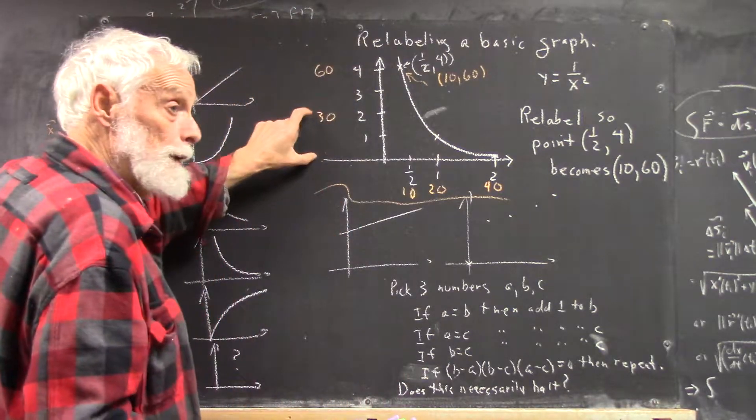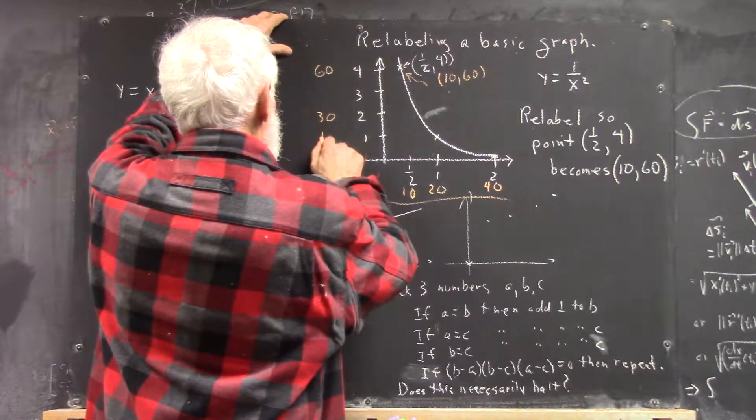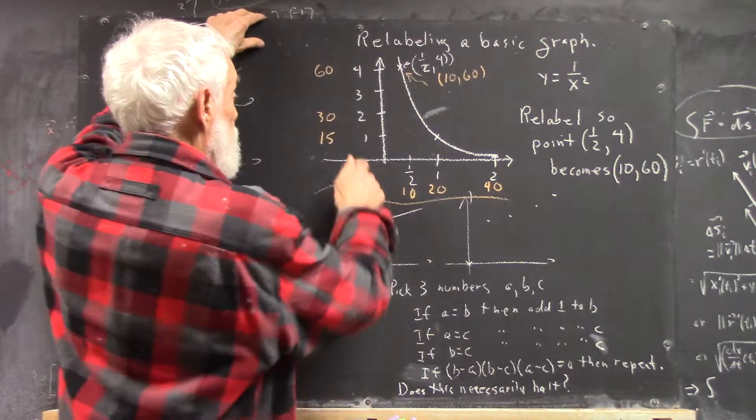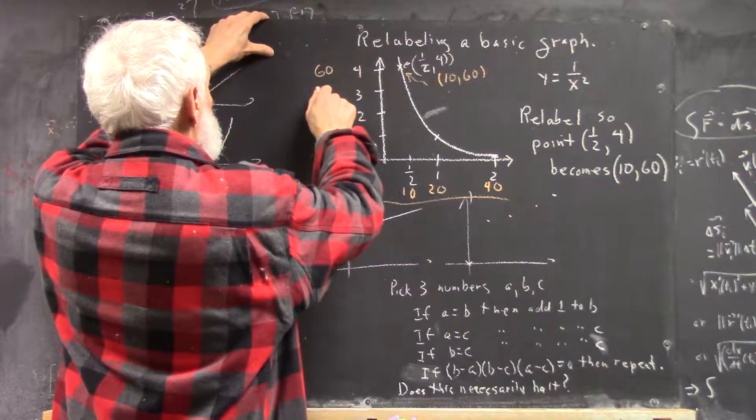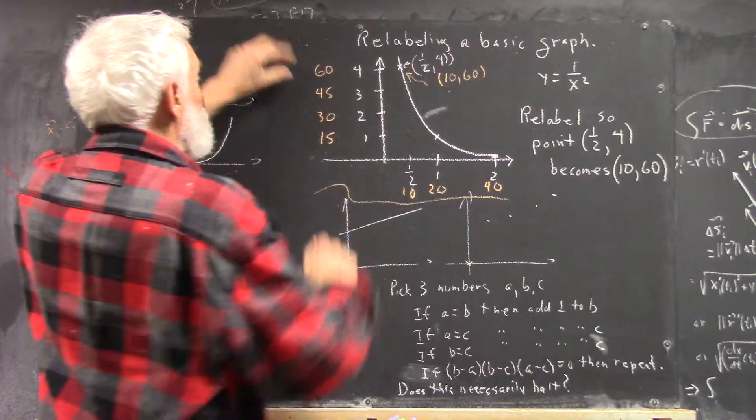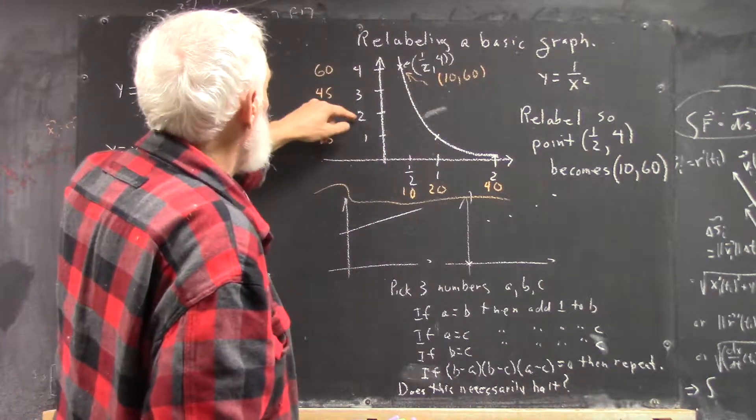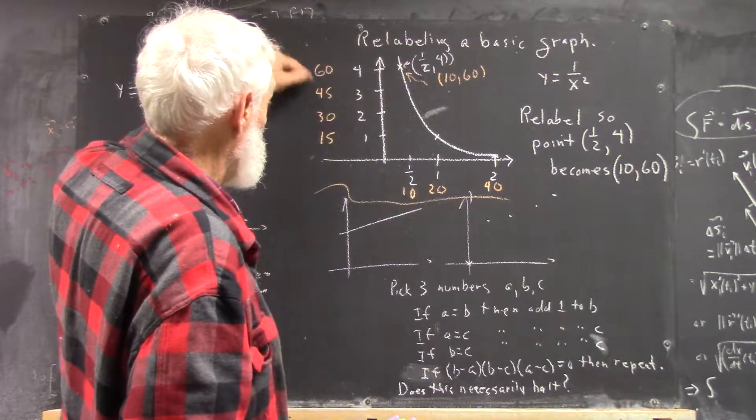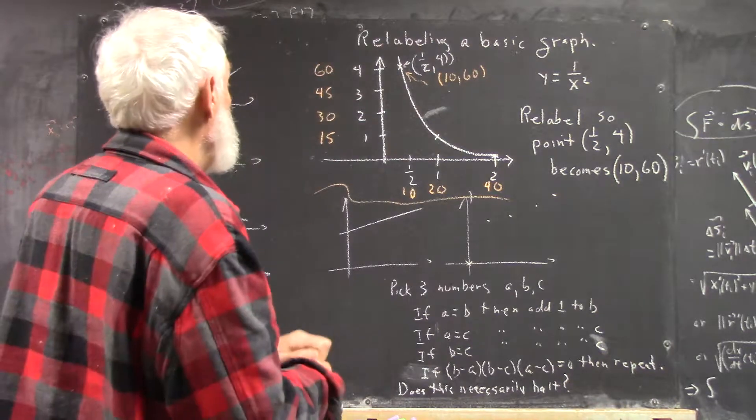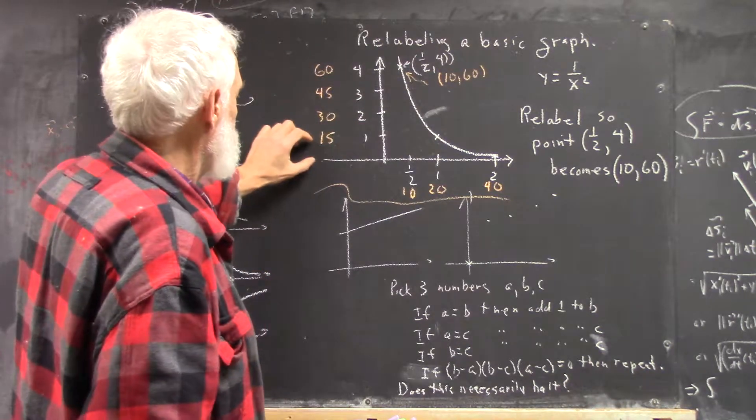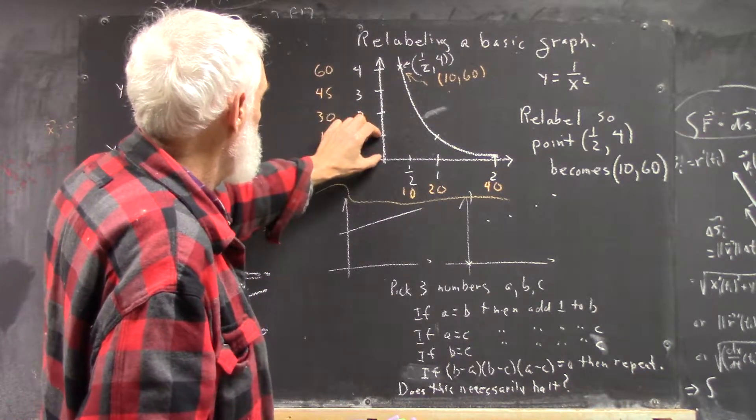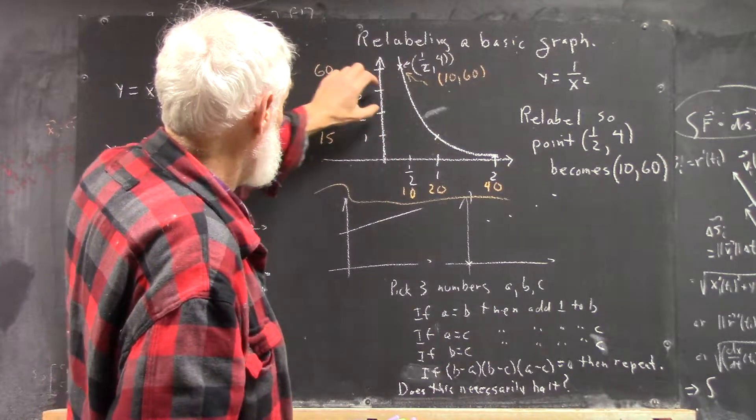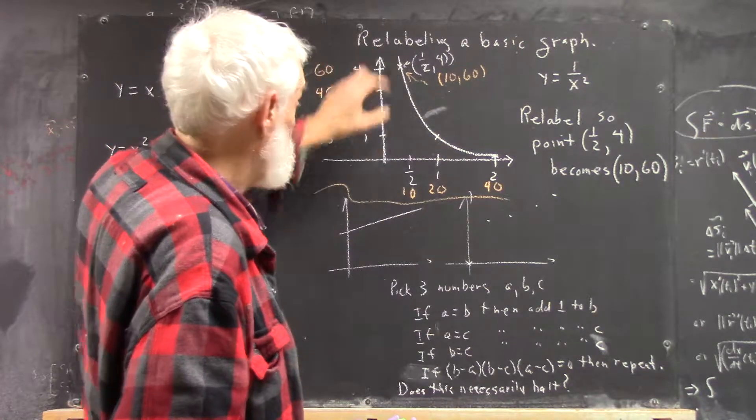And half of 30 is 15, and this point is twice as close to 0 as this one, so this point has to be 15. And then we can easily figure out that this point is halfway between this one and this one. Halfway between 30 and 60 is easily calculated. That's 45. And now we see there's an increment of 15 between here and here, another increment of 15 here, another increment of 15 here, and another increment of 15 up here.